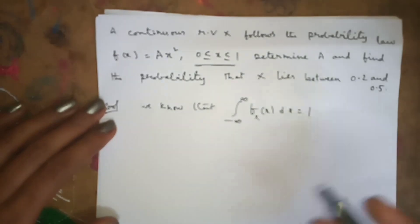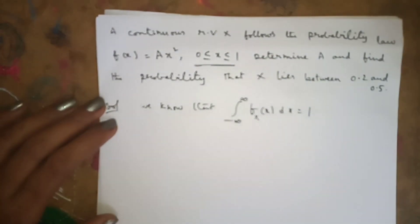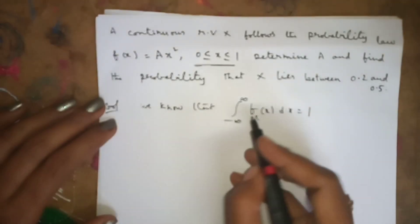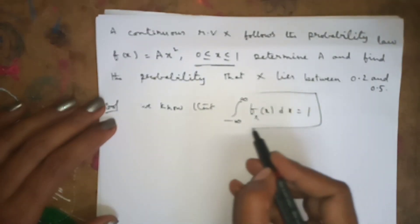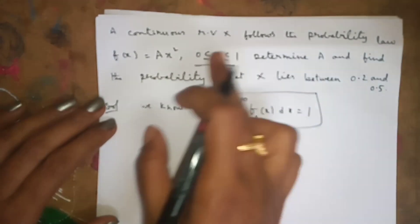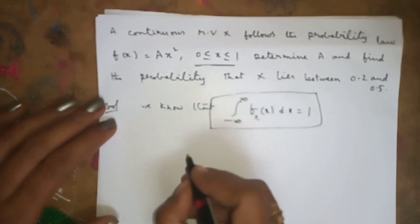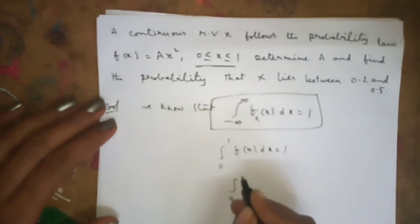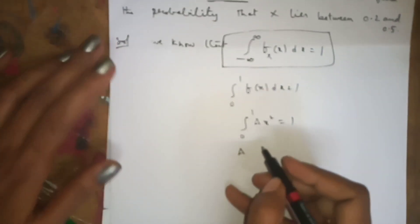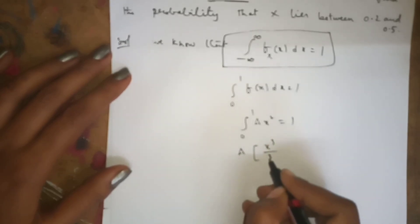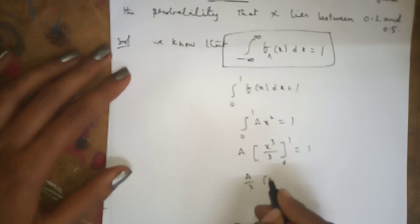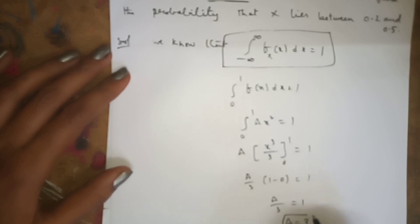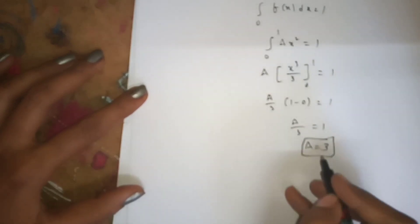Since the limits are given between 0 and 1, we write the integral from 0 to 1 of f(x) dx equal to 1. Substituting f(x) = ax², we get a times the integral of x² from 0 to 1. Since a is a constant, the integral of x² is x³/3, so a/3 times [1³ - 0³] equals 1, giving a/3 = 1, therefore a = 3.